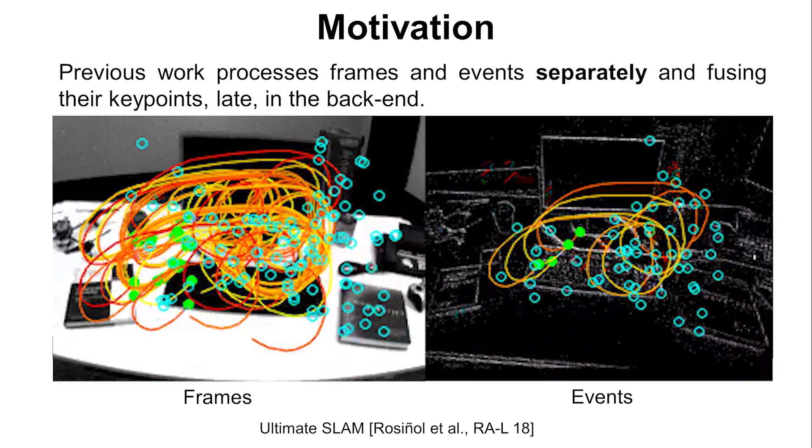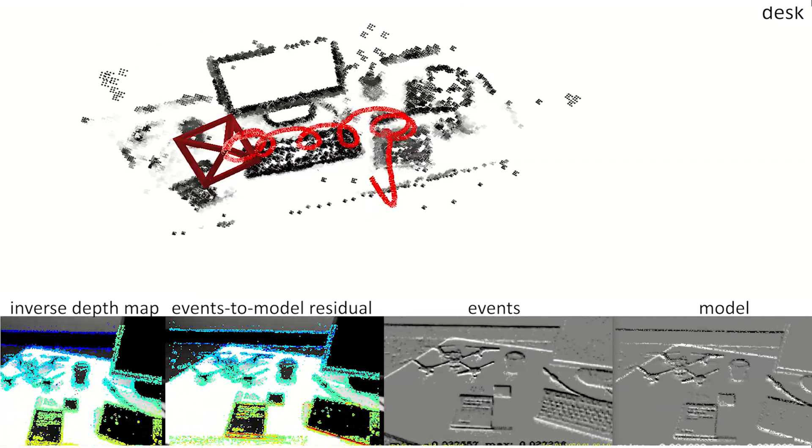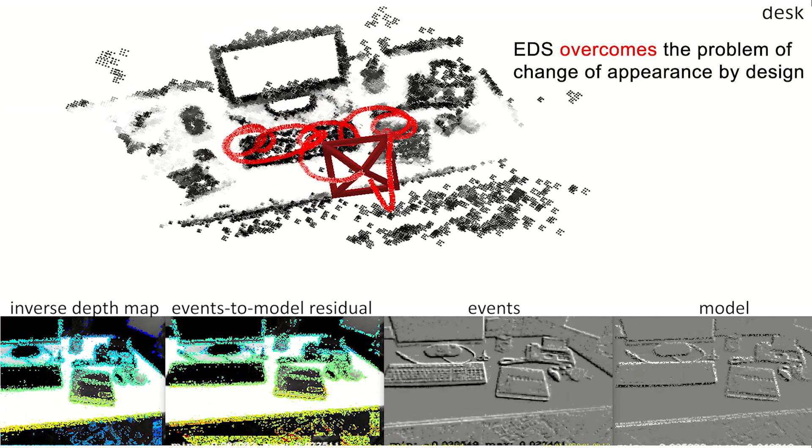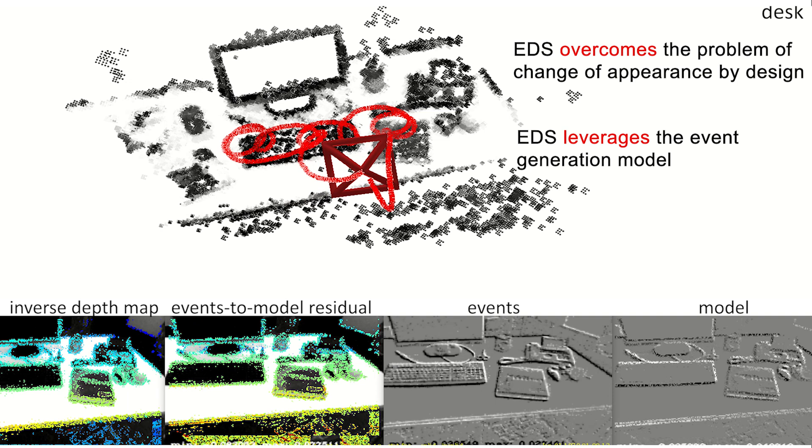Until now, no effort has been made in VO or SLAM to fuse the same keypoint seen by both sensors. We introduce EDS, a direct monocular visual odometry method with events and frames. EDS overcomes the problem of change of appearance by design and fuses events and frames in a principled manner in the front-end by exploiting the event generation model.